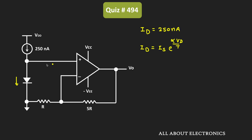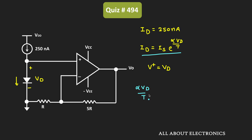So here to find the output voltage Vout, first of all we need to find the voltage at this non-inverting node. If you see over here, that is equal to the voltage across this diode. So we can say that V+ is equal to Vd. We can find this voltage with the help of this equation. So if we take the natural log on both sides, then we can write this expression as α times Vd divided by T, that is equal to natural log of Id divided by Is.